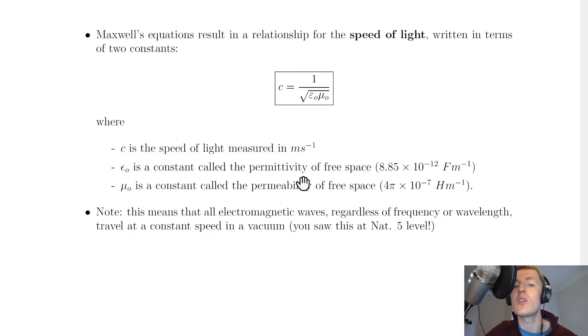Epsilon naught is a constant called the permittivity of free space: 8.85 times 10 to the minus 12 farads per meter. Mu naught is a constant called the permeability of free space: 4 pi times 10 to the minus 7 henrys per meter.